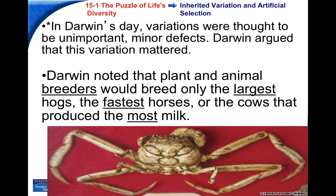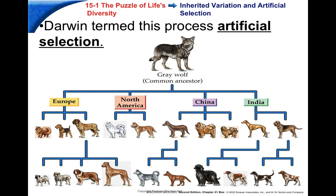Darwin noted that people had been changing plants and animals for thousands of years by breeding organisms for specific traits — breeding horses to be faster, cows to produce the most milk, dogs to have certain characteristics. If you look at the crab at the bottom, you can see a little face on the carapace. That's due to humans throwing back crabs that looked like they had faces, and over time most crabs in that area of Japan started to look like a samurai warrior. Darwin termed what people had been doing as artificial selection — man-made selection.